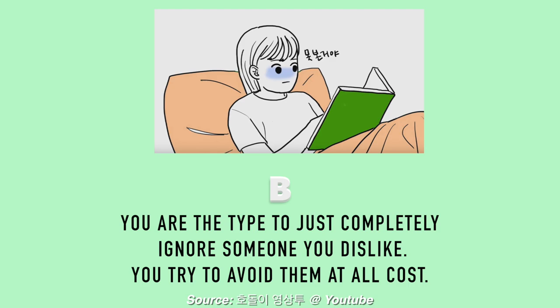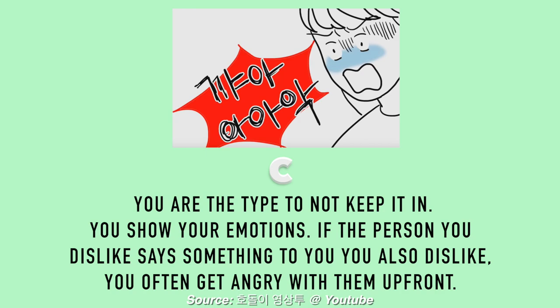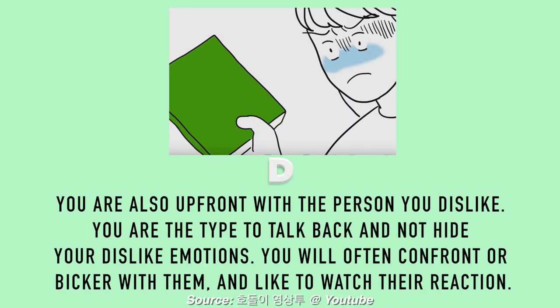This question reveals how you act around someone you dislike. A means you act nice on the outside but continue disliking the person internally. B means you completely ignore someone you dislike and avoid them at all costs. C means you're expressive and confrontational — if someone you dislike says something you don't like, you'll get angry upfront. D means you're very upfront, talk openly about your dislike, and even enjoy watching their reaction when you confront them.